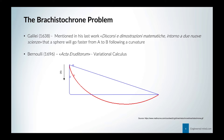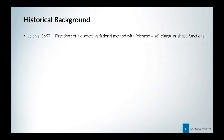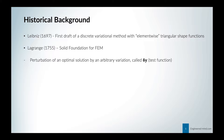In 1697, we have Leibniz coming up with his first draft of a discrete variational method with element-wise triangular shape functions. We will discuss shape functions in a future video and not delve too much into them in this basic introduction. Lagrange, in 1755, laid a solid foundation for the finite element method, where he basically took an optimal solution, perturbed it by an arbitrary variation, and called it delta y, which we later call the test function.